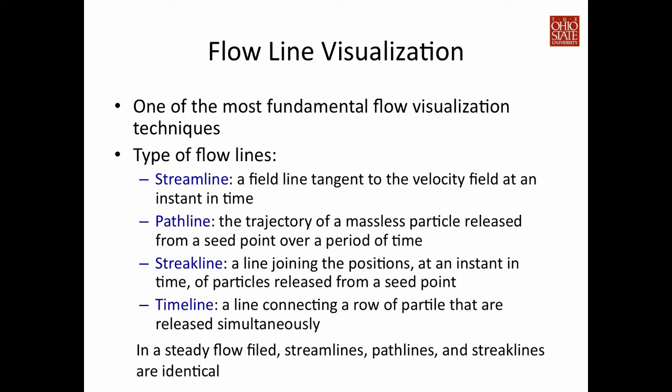There are several types of flow lines, depending on how you place the initial particle position, and also whether the data field is static or time-variant. These include streamline, pathline, streakline, and timeline. They will look exactly the same if your underlying data is a static field, that is, there's only one time step. Sometimes people also call this instantaneous flow lines.